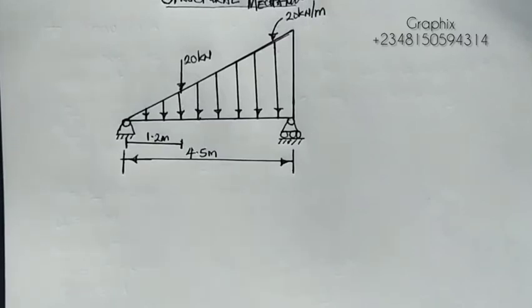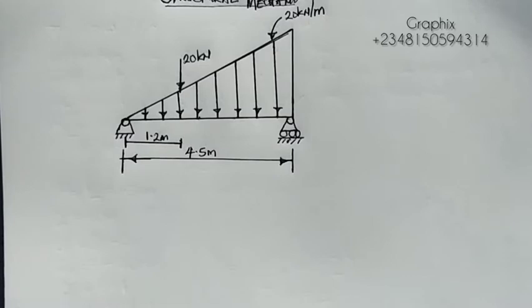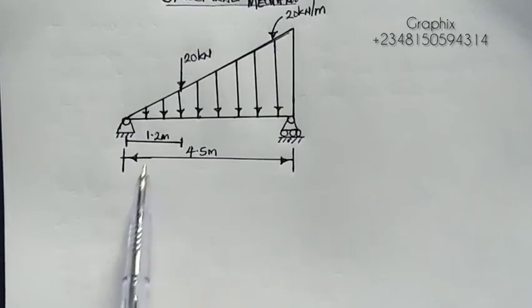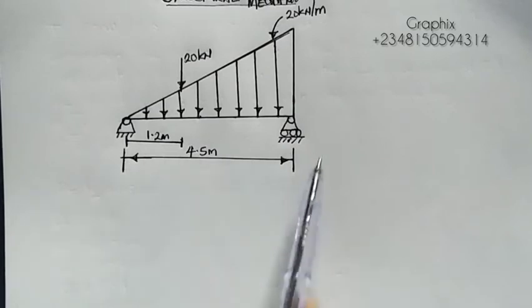My name is Graphics. Today we will look at a beam — specifically a beam that has a UVL, a uniformly varying load. We know there are different kinds of loading: it can be a UDL, uniformly distributed load, or it can be a point load. But in this case, this is a beam with a uniformly varying load.